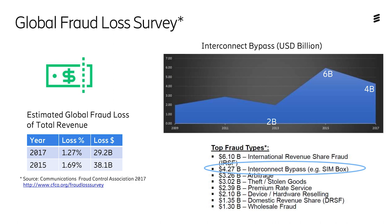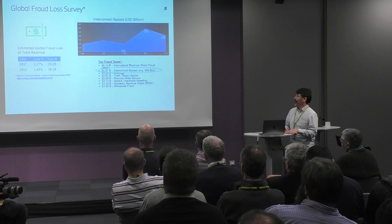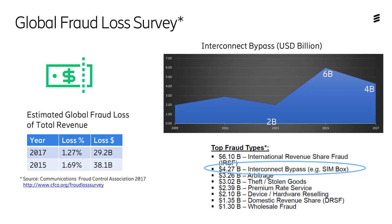How serious is this fraud against operators? There is a survey done every year asking all operators in the world how much money they are losing. The latest figures from 2017 show 29 billion dollars lost due to fraud. About 4 billion of that is due to interconnection bypass. You can see how it has been developing over the years — there is a decrease from 2015 to 2017 as operators take measures to fight fraud, but it could grow again as it did from 2009 to 2011.